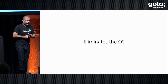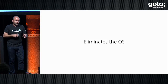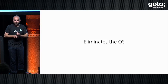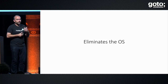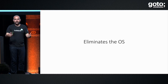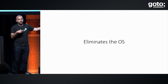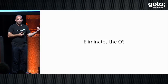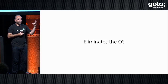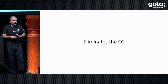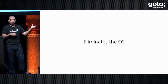Habitat eliminates OS dependencies. You're no longer dependent upon operating system components, libraries, and other pieces. That's often why you see a line like 'FROM Ubuntu 12.04' — because you need some version of GLibC or software that Ubuntu ships. Habitat eliminates that by essentially recompiling the world and having those artifacts available in an artifact repository.